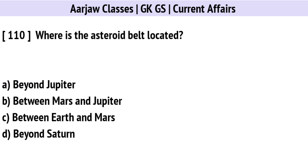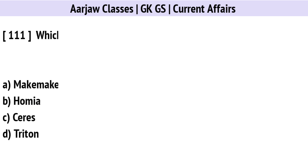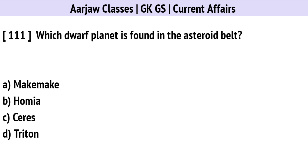Where is the asteroid belt located? The right option is B: Between Mars and Jupiter.